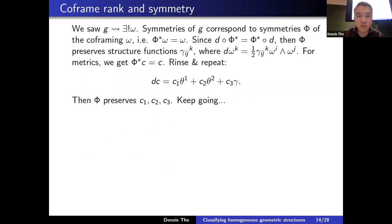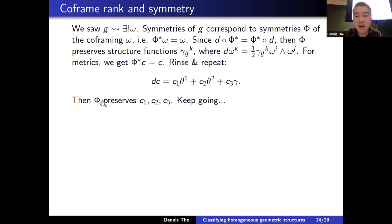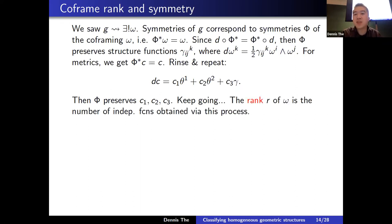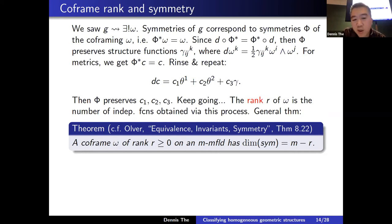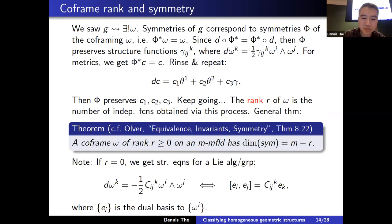If c is non-constant, we take its exterior derivative, write it in terms of the co-frame, and get potentially new functions c₁, c₂, c₃. By commutativity of pullbacks with d, any symmetry preserves these new structure functions. We keep going. The rank r of a co-frame is the number of functionally independent functions obtained via this process. A theorem states: if the co-frame has rank r on an m-manifold, then the dimension of the symmetry algebra is m − r.